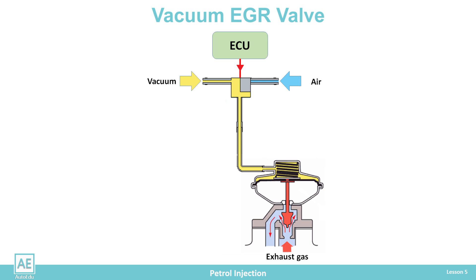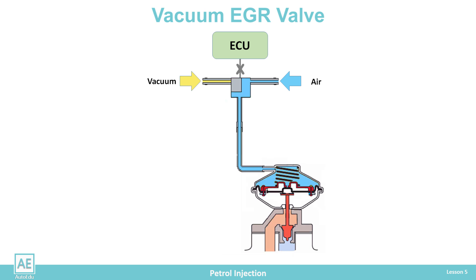A vacuum enters the upper chamber instead of outside air; due to the weaker pressure the diaphragm rises and opens the valve for exhaust gas flow. When the conditions for exhaust gas recirculation are disrupted, the engine control unit cuts power to the solenoid valve, which closes the vacuum supply and allows outside air into the vacuum valve. Pressure rises in the upper chamber, higher air pressure pushes the diaphragm, and closes the valve, stopping the exhaust gas flow to the intake manifold.